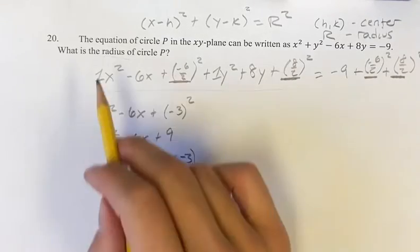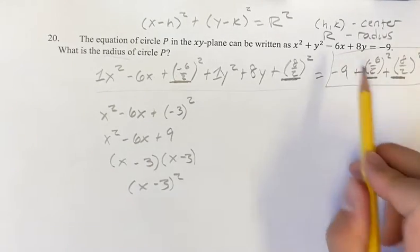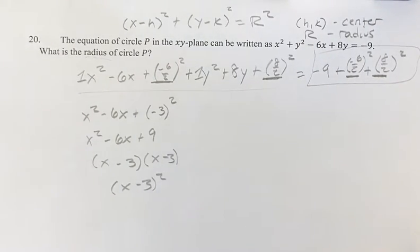Again, you don't have to worry about that, because we're just finding the radius, which is on this side of the equation. So we have to find this value is equal. Make sure you can see that. This value is equal to r squared.